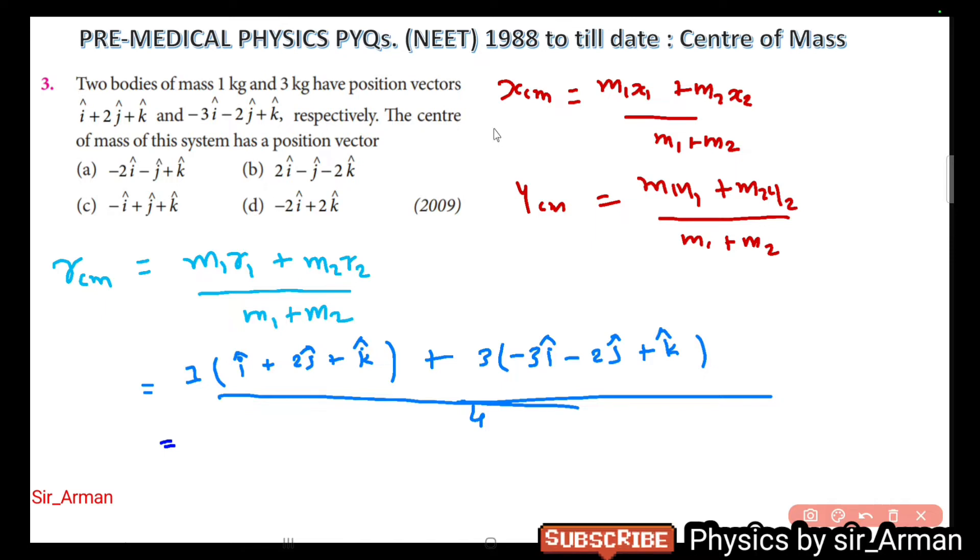Here i, j, and k means the positions in x, y, and z. So first, you can see that in the first part here it is one meter in x direction, two meters in y direction, and one k cap means one meter in z direction. Similarly for m2, that is for 3 kg mass, here it is minus 3 meters in x direction, minus 2 meters in y direction, and one meter in z direction.